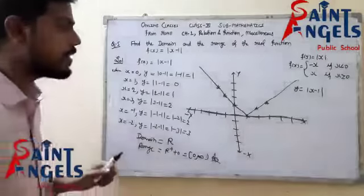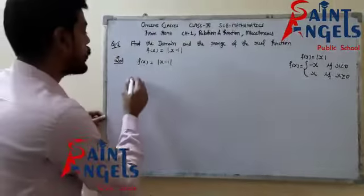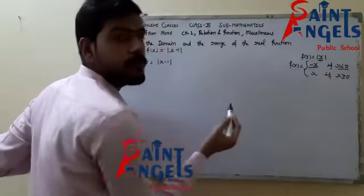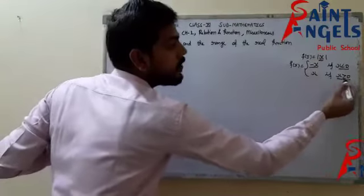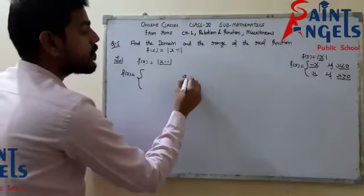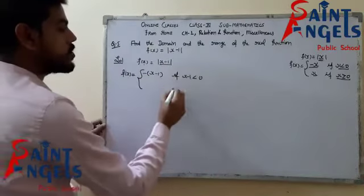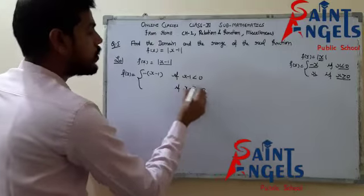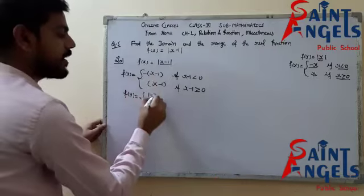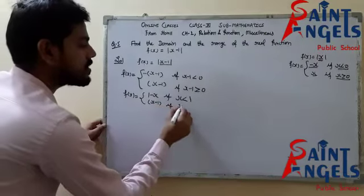That was the first method. Now for the second method: we know that if f(x) = mod x, then if the number inside the mod is negative (less than 0), it becomes minus x; if the number inside is positive (greater than or equal to 0), the value is x. For f(x) = mod(x − 1): when x − 1 < 0, mod puts an additional negative giving minus(x − 1) = 1 − x, when x < 1. And when x − 1 ≥ 0, the value is x − 1, when x ≥ 1.